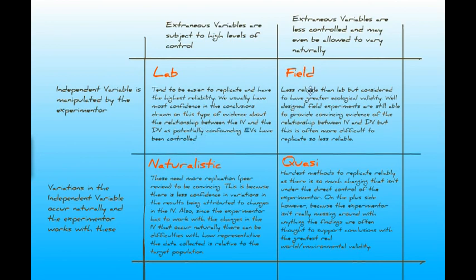In a field experiment, we still manipulate the IV but exercise less control over extraneous variables. This method is less reliable but considered to have greater ecological validity — it's more like the real world, with small variations we can't account for. It can still provide convincing evidence of the relationship between IV and DV, but is more difficult to replicate and open to criticisms of lower reliability.